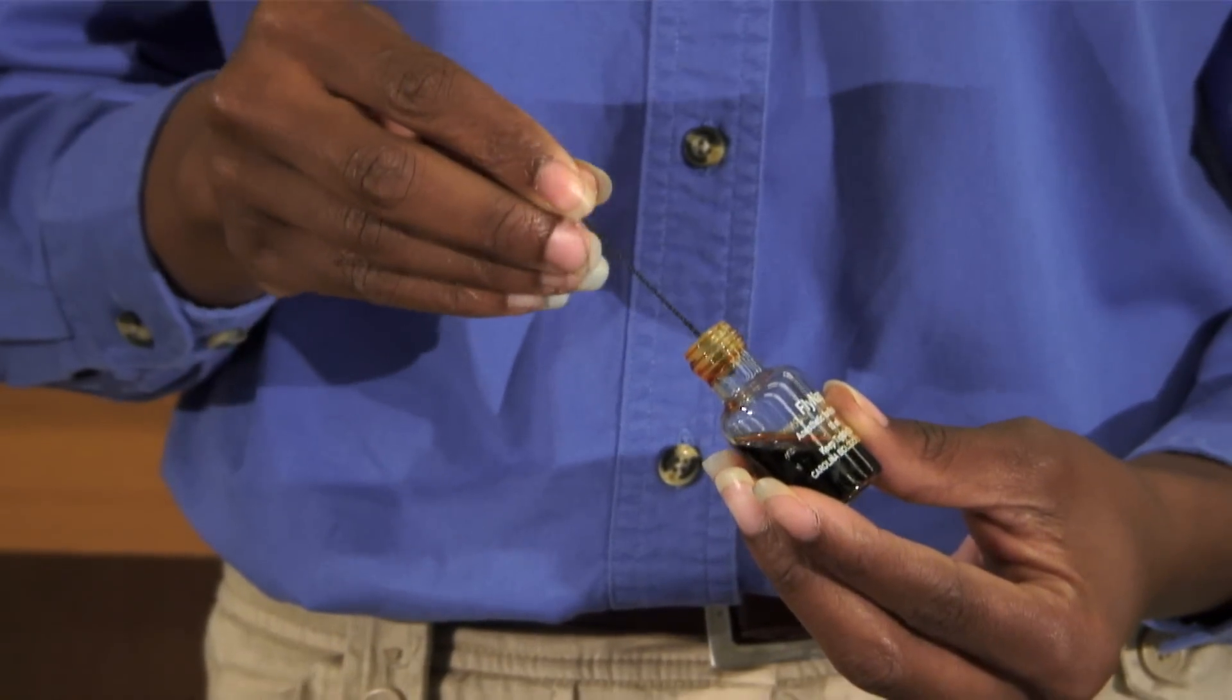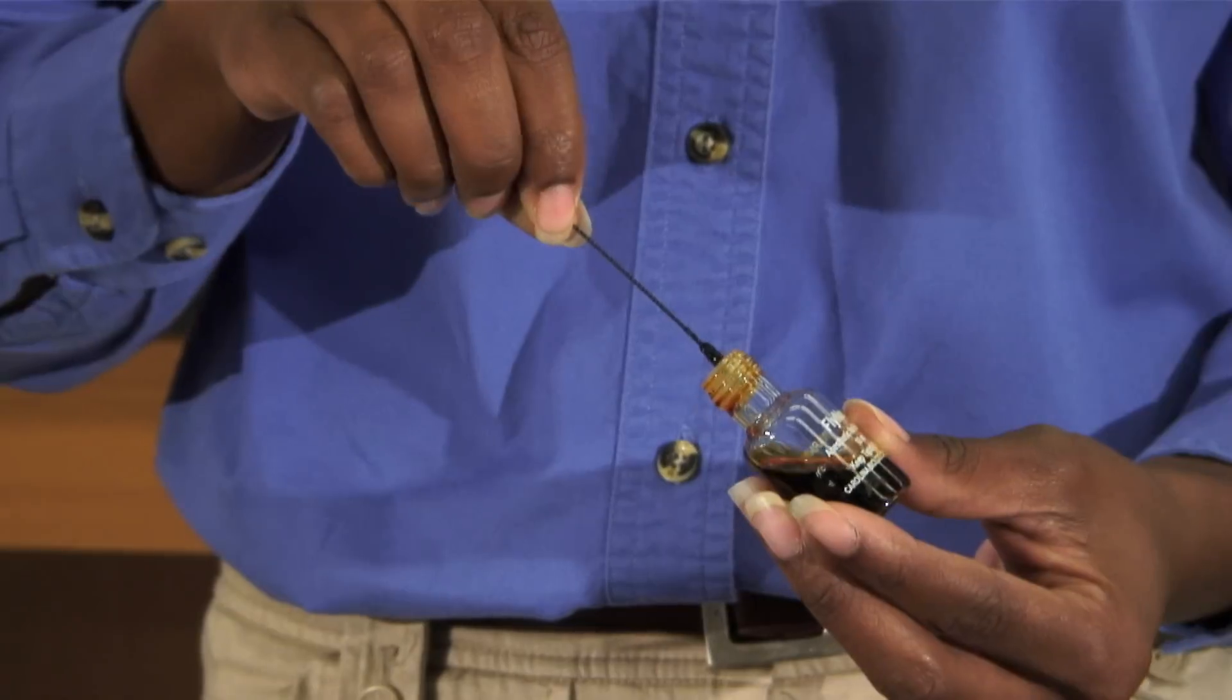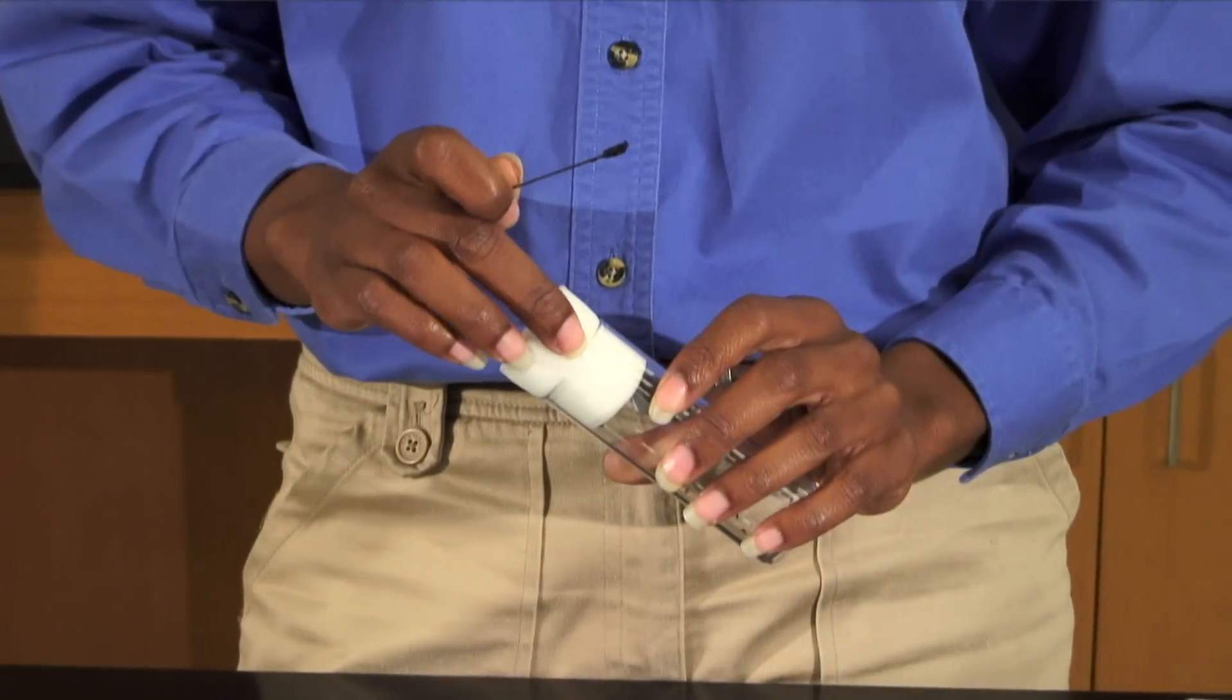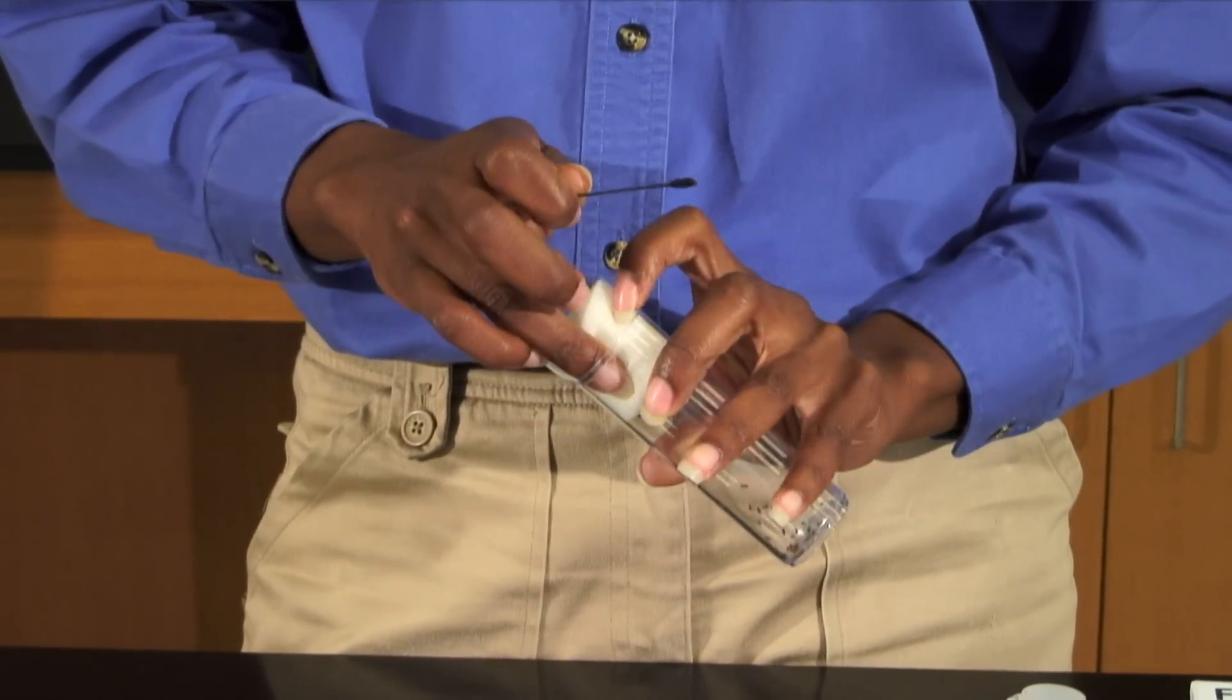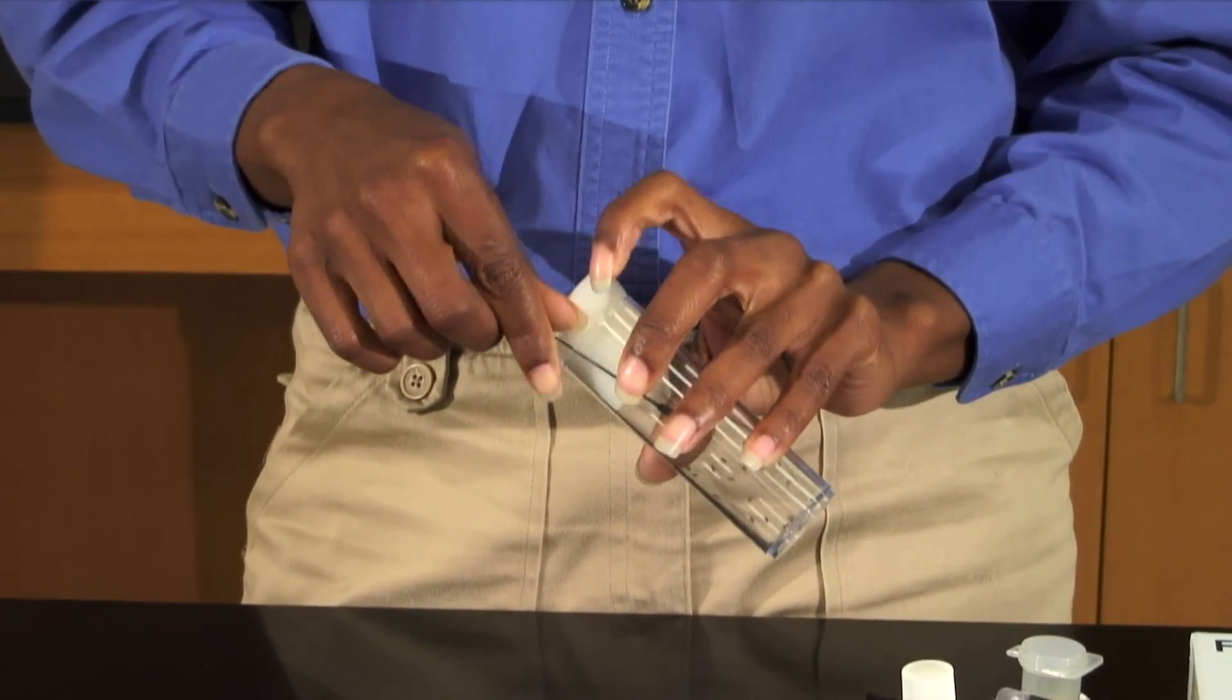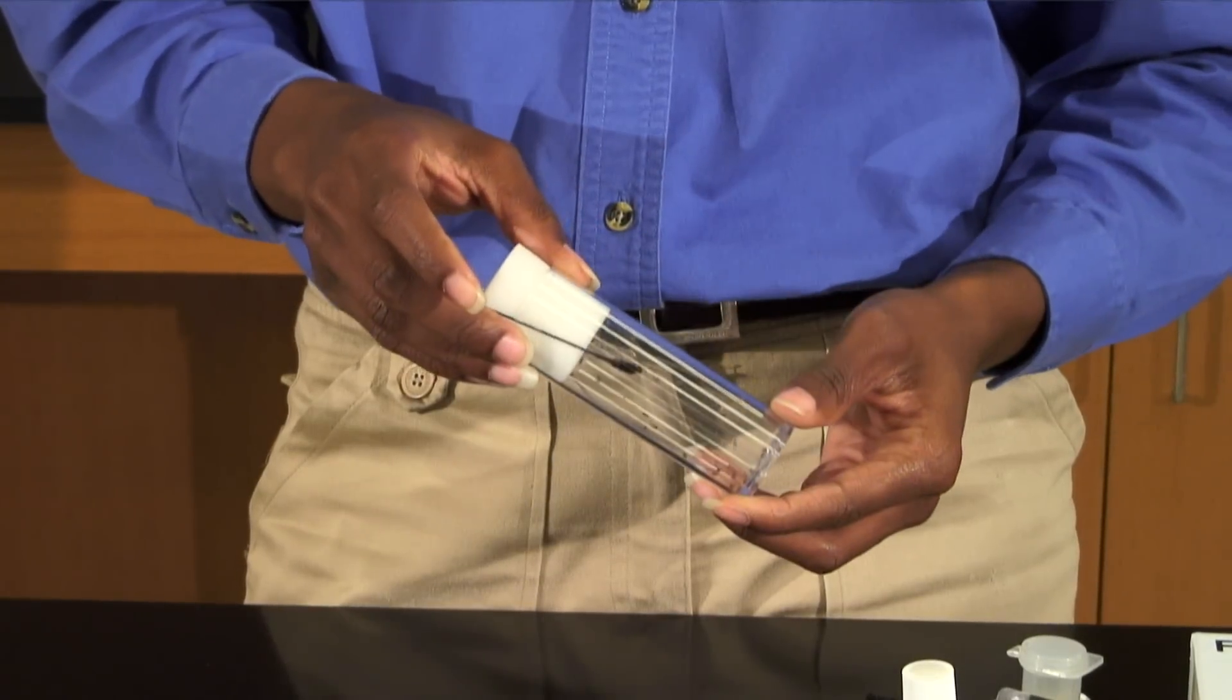Dip the absorbent end of the anesthetic wand in the FlyNap solution, making sure to remove excess liquid. Use one finger to push the plug in the anesthetizing vial slightly to one side. Quickly stick the anesthetic end of the wand into the vial.